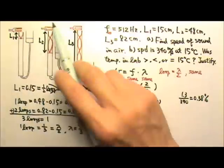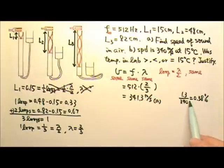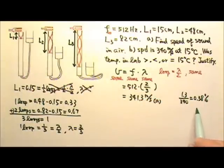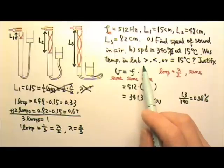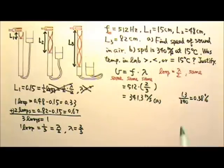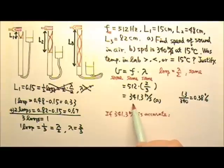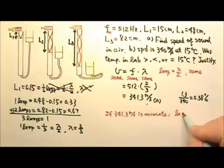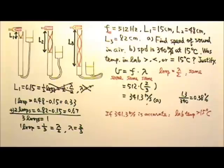So if the experimental uncertainty is larger than 0.38%, we will not be able to decide whether the temperature in the lab is higher, lower, or equal to 15 degrees Celsius. However, if the speed is really accurate, 341.3 meters per second, then we can say that the temperature in the lab must be higher than 15 degrees Celsius. Because for speed of sound in air, the higher the temperature, the higher the root mean square speed, the higher the speed of sound in air.